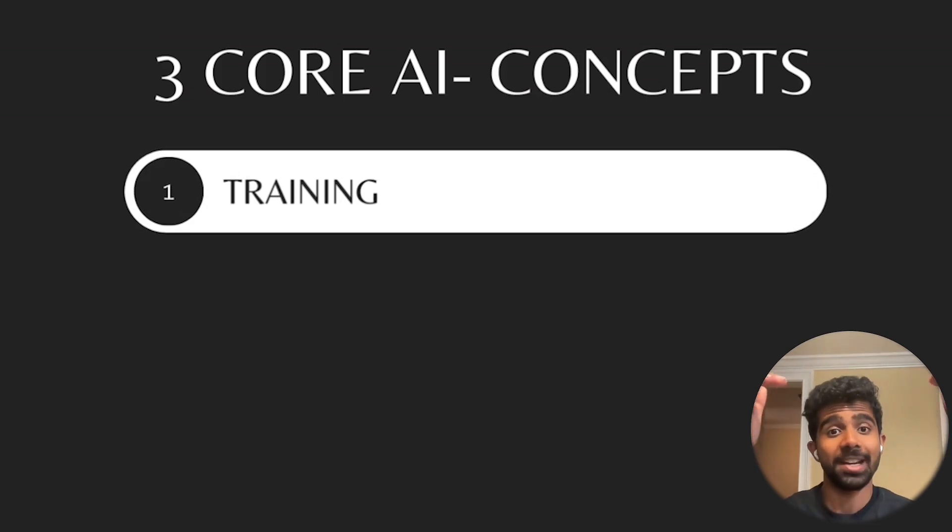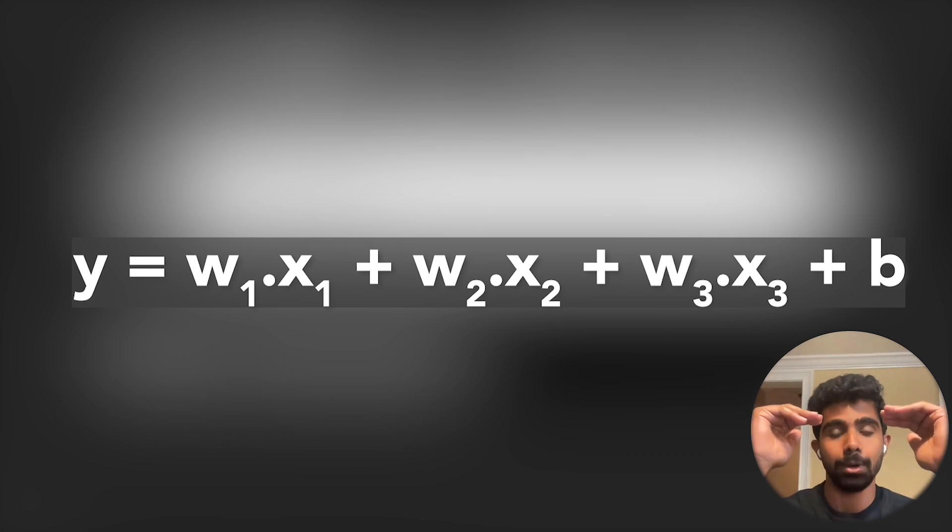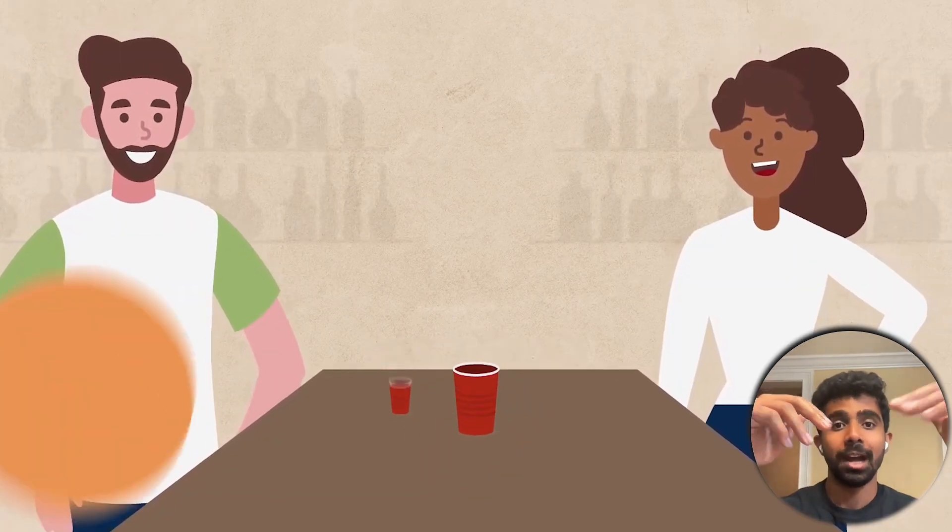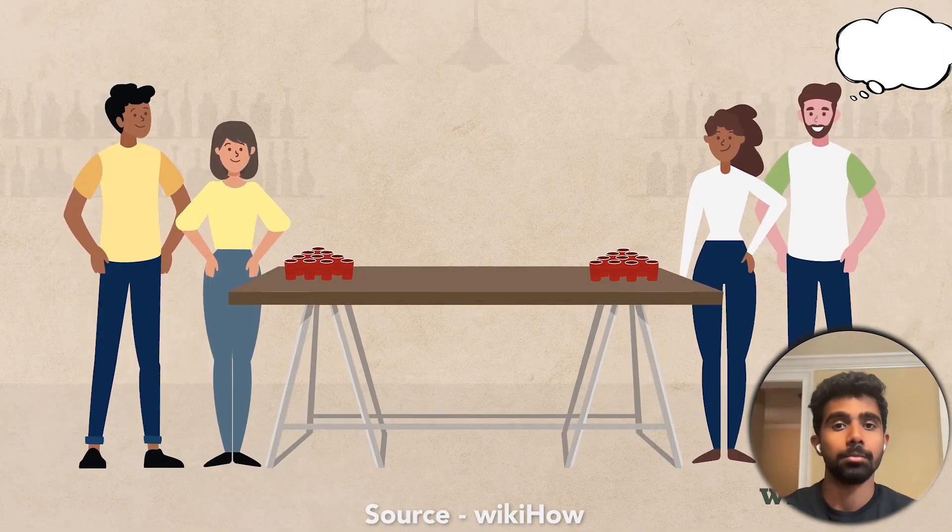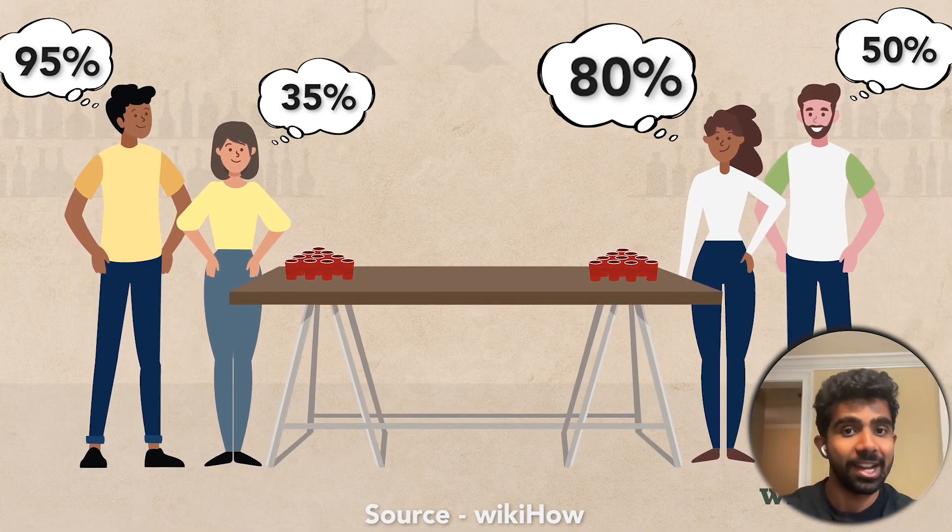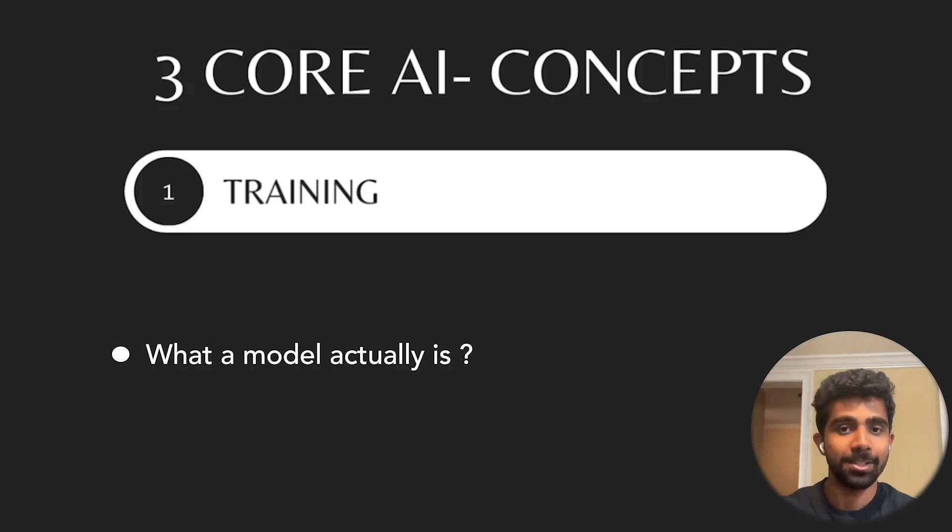The first concept is called training. People talk a lot about models training and learning, but what does that actually mean? Well, first we need to define what a model actually is. The simplest kind of model is this equation right here. Let's say we're trying to predict how good someone is at beer pong. Our model is going to predict someone's win accuracy at the game.